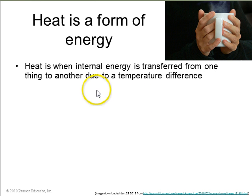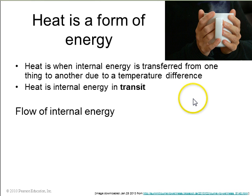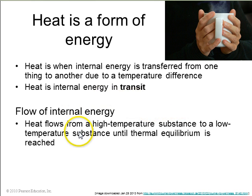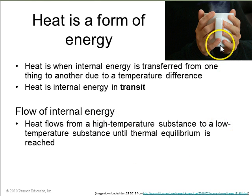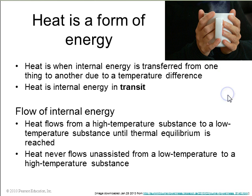Heat is a form of energy that is transferred from one thing to another due to a temperature difference. Heat naturally flows from high temperature objects to low temperature objects. For example, this coffee is high temperature and the hands around it are lower temperature, so heat will naturally flow out of the coffee and into the hands. Heat can never flow unassisted from a low temperature to a higher temperature object.